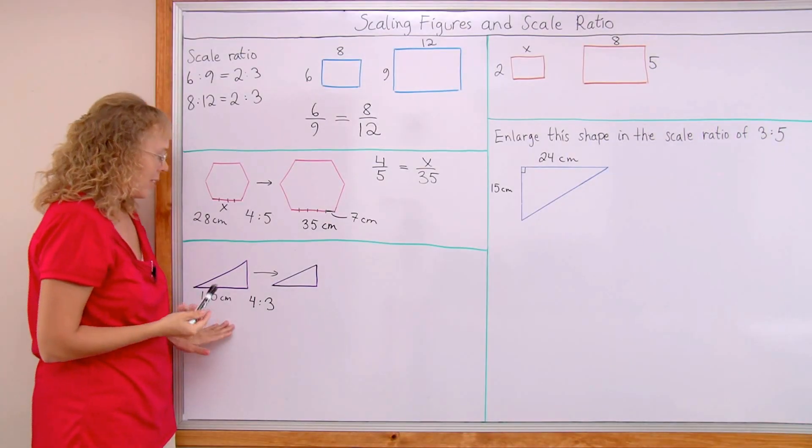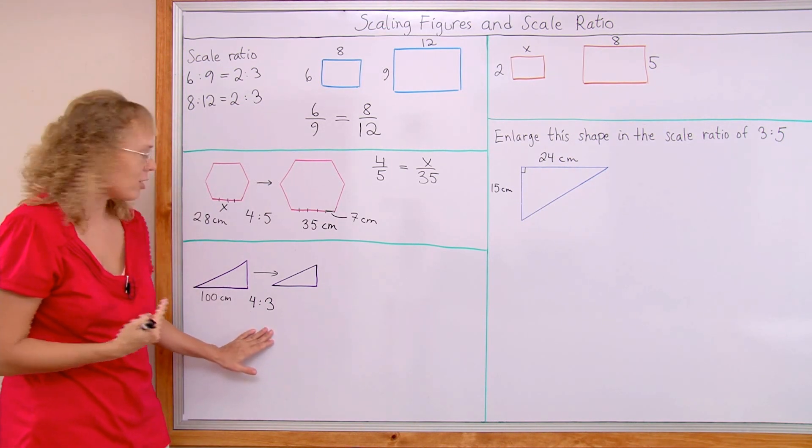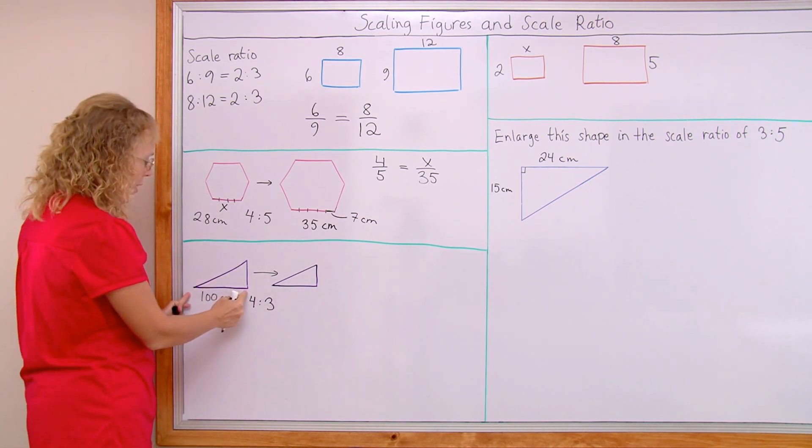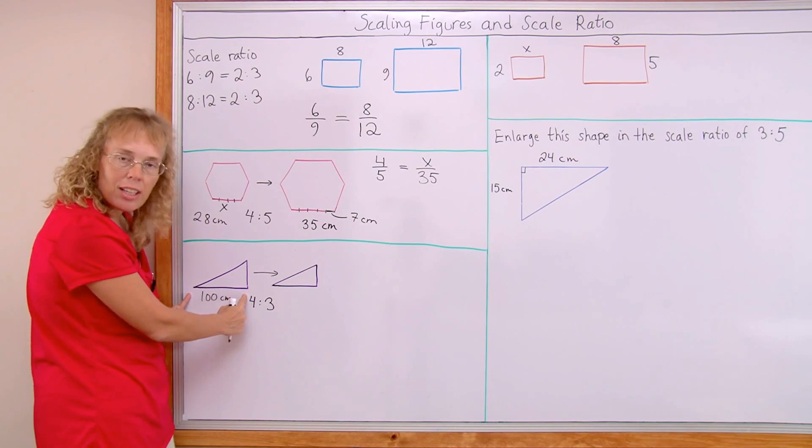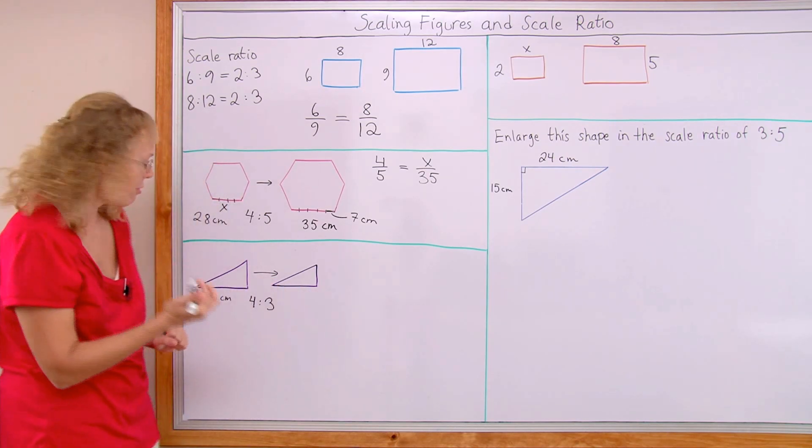Over here, it is a similar problem. 4 to 3 is our scale ratio. This time the figure was shrunk. And so I think the same way as if this side here is divided into 4 parts, then they become 3 parts here in the smaller figure.